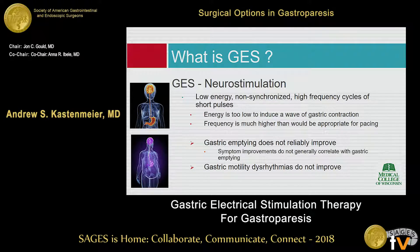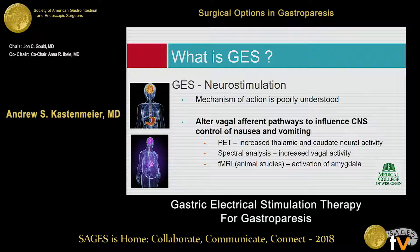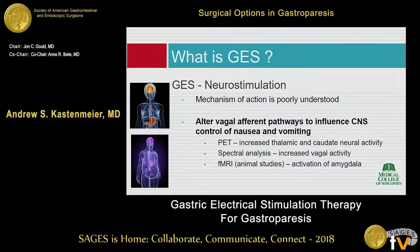It also does not correct motility dysrhythmias. What does it do then? Based on PET scans, spectral analysis, and functional MRI studies, we've found that there's increased afferent vagal activity going back to the CNS, and increased thalamic, caudate, and amygdala activation. We think this electrical signal is influencing the central nervous system's controls of nausea and vomiting, so that patients are perceiving less nausea and having the vomiting center impacted by these electrical stimuli.